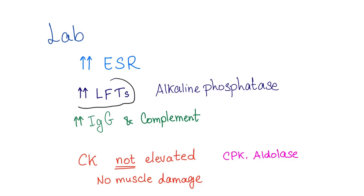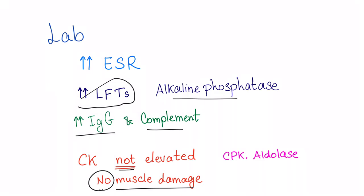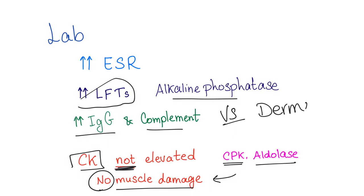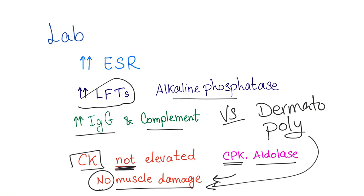Liver function tests may show elevated liver enzymes — alkaline phosphatase will be high, and IgG and complement may be elevated. However, the enzymes that signal muscle damage are not elevated — creatine kinase, creatine phosphokinase, and aldolase are all normal. There is no muscle damage. Contrast this with dermatomyositis and polymyositis, where the muscles are truly damaged and these enzymes will be skyrocketing.